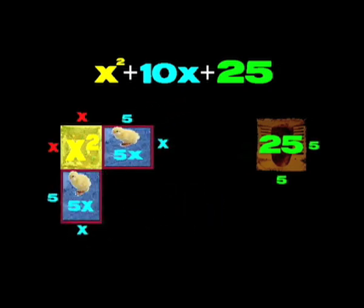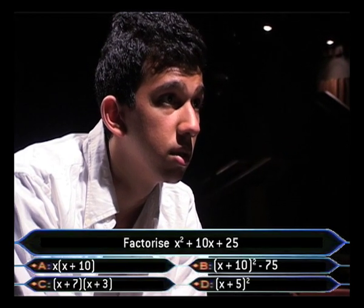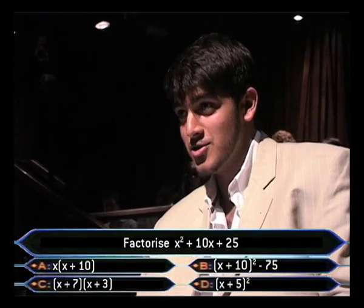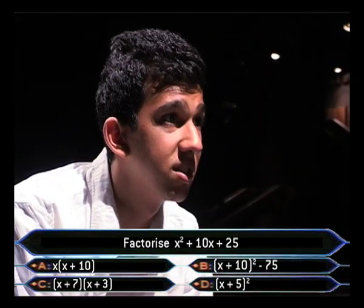I split the chickens in half, 5x each, and put the runs next to the shack. Then in the corner, my dunny. All the pieces make a square of side x plus 5. D. Are you sure it's not B? D. Final answer.